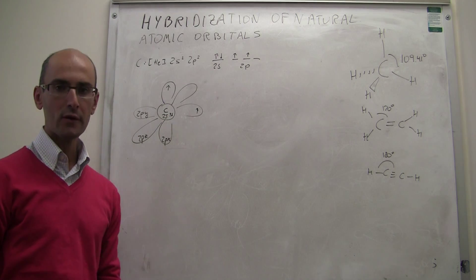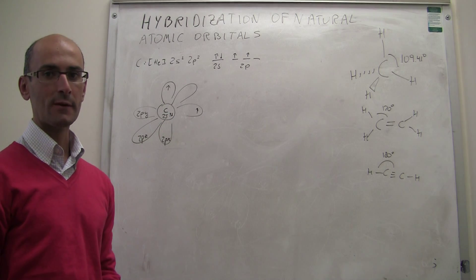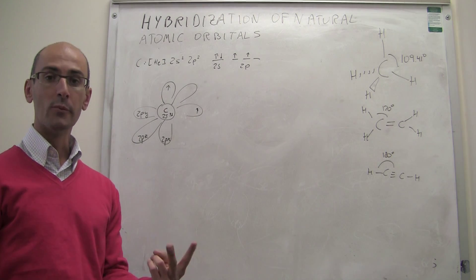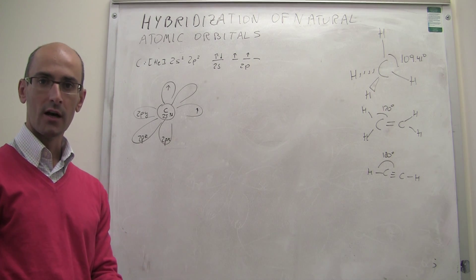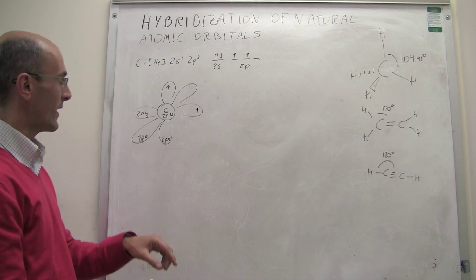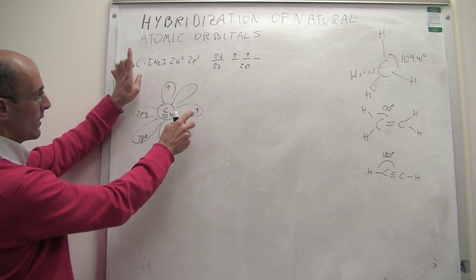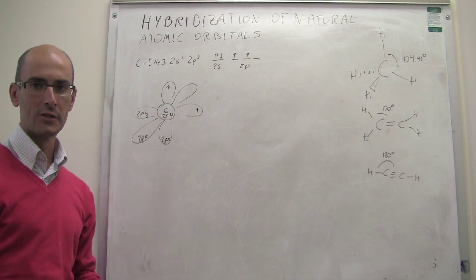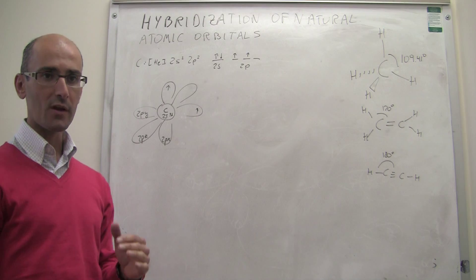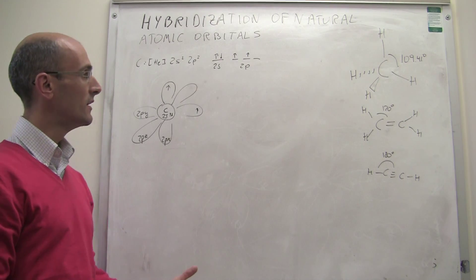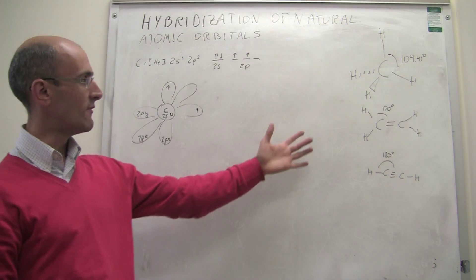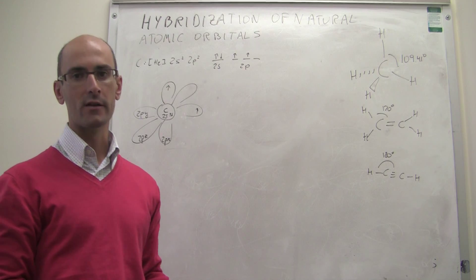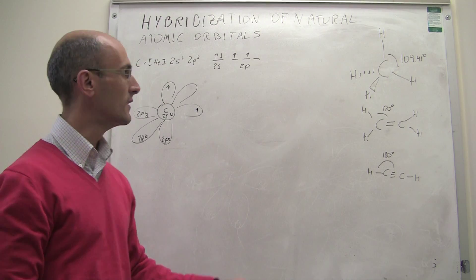From valence bond theory, you would expect carbon to form two bonds, and the geometry around that carbon atom should be 90 degrees because the 2py orbital and the 2px orbital are perpendicular to each other. However, that's not what happens in nature — you actually have a variety of compounds in which the geometry around the carbon atom can be vastly different.